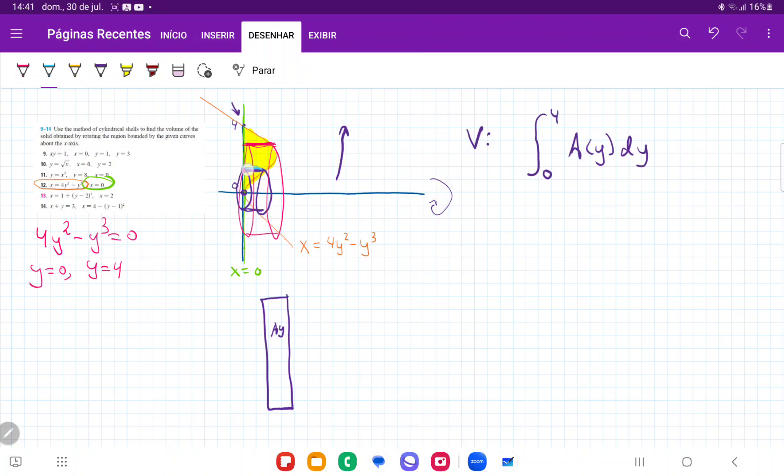So the first component is this section right here, which corresponds to this width here. So this width, we can see that it's just the height of this orange curve, right? It's the difference from where it touches this orange curve all the way out to the y-axis.